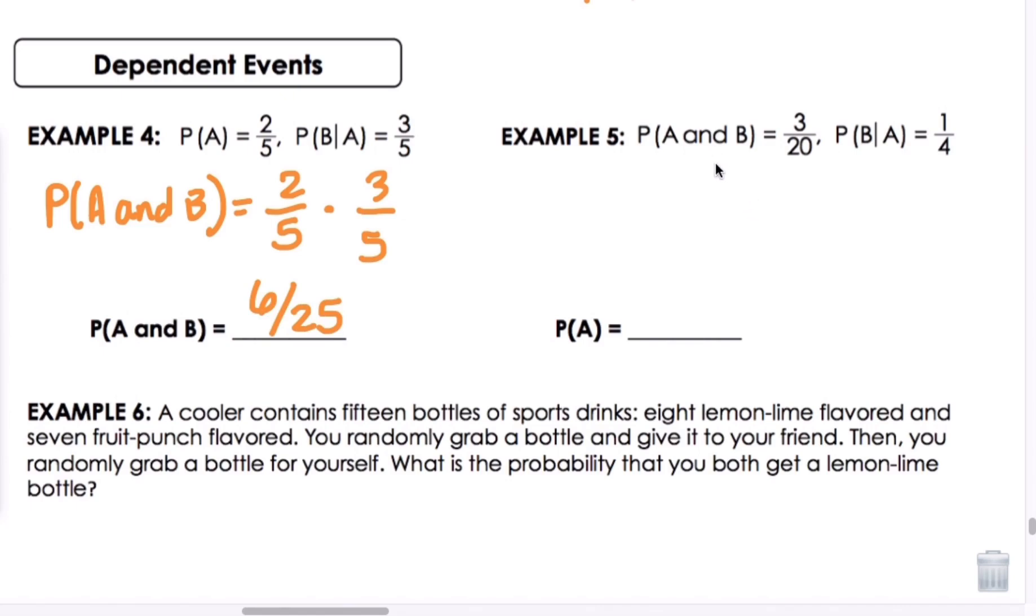Now we're given some different information in example 5. We're given P of A and B is 3 twentieths, and P of the probability of B given A is 1 fourth. So we're going to substitute that in. 3 twentieths equals P of A, we don't know, times 1 fourth. Which means we'll multiply by 4, so we'll get 12 over 20, which is 3 fifths.